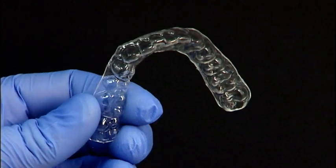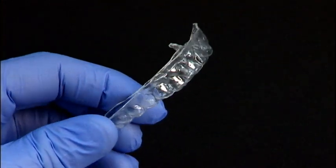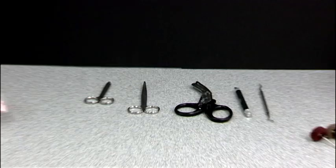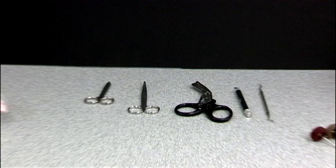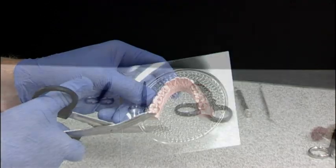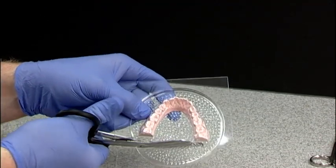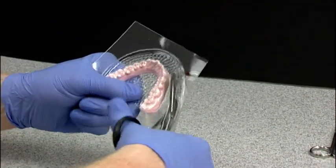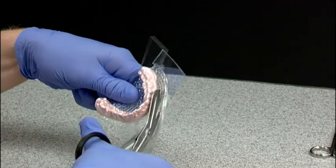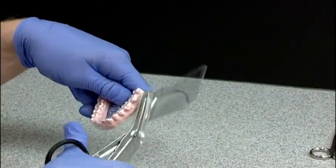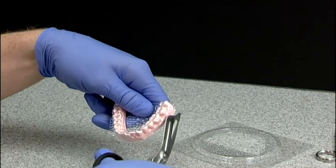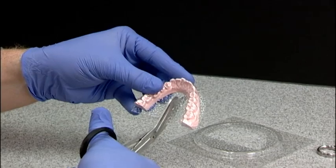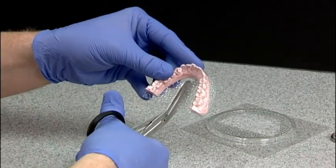A comfortable appliance is critical for patient compliance and to achieve a successful treatment outcome. Using the right tools when trimming and polishing your appliance helps to assure the best possible fit. Starting with universal shears, trim the excess plastic around the model, cutting straight across the back edge and near the base around the model. Cut a slit in the palate area and be sure not to cut into the model.